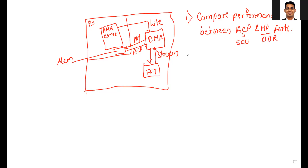The second thing we are going to discuss is that to do this comparison, we are going to use two DMAs and we are going to use two FFT IPs — one for the ACP and one for the HP.